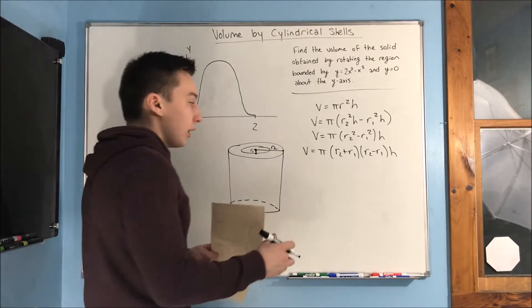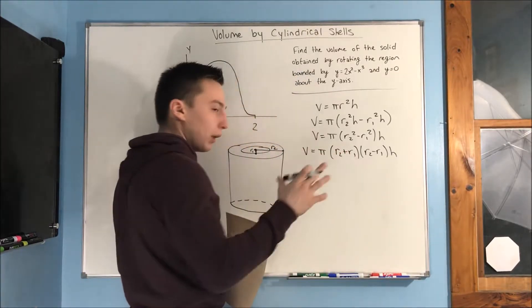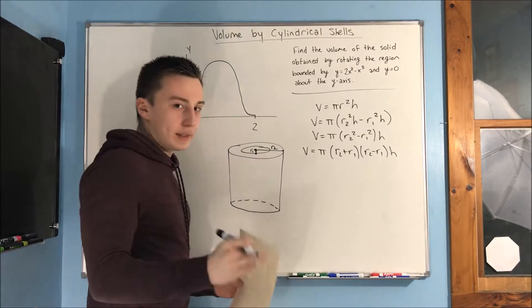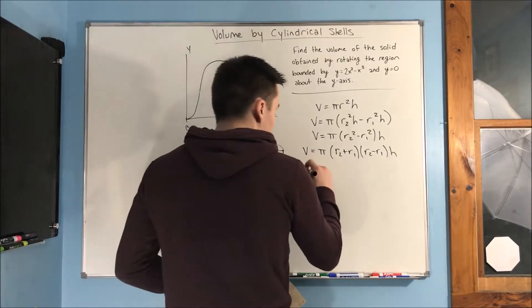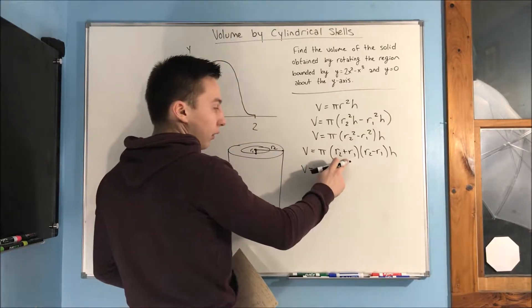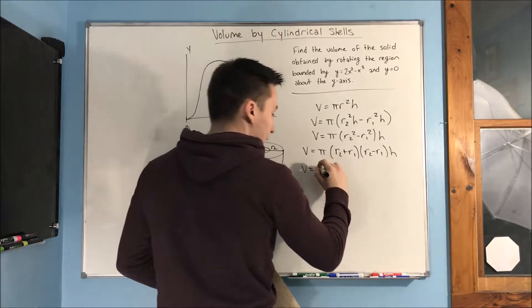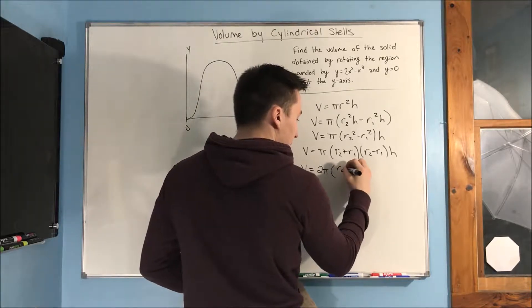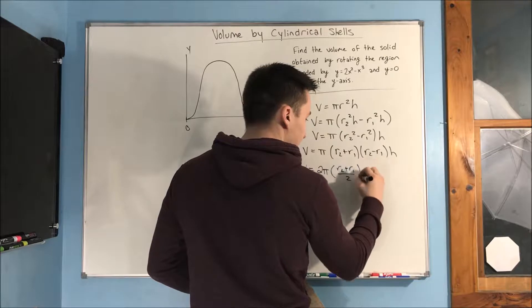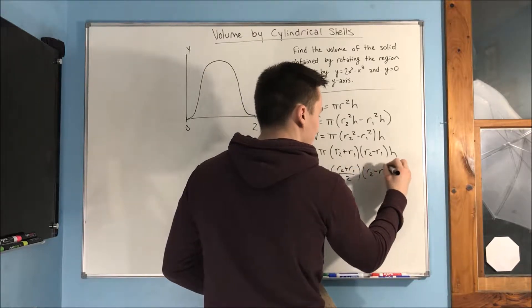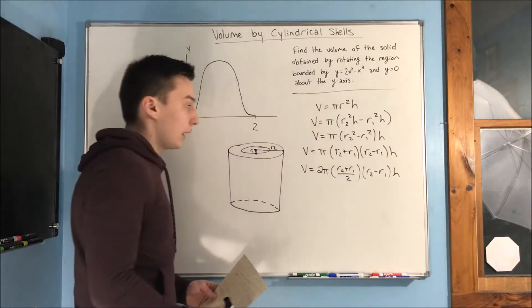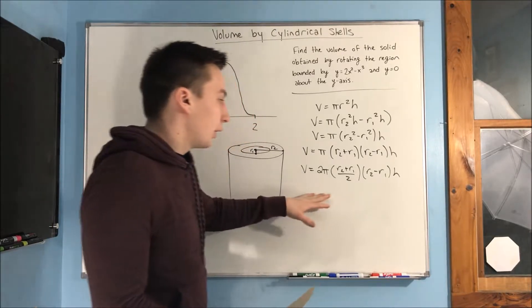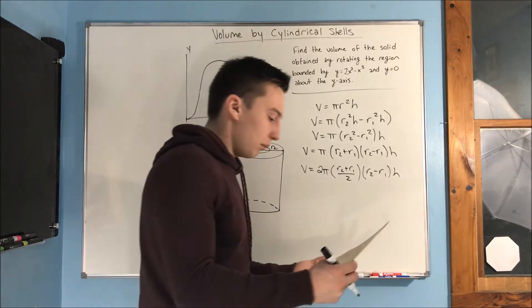So, we also can, look, what we're going to do, we're going to take out a 2 from this r2 plus r1, and I'll tell you why we do that in a little bit. But, if we take out a 2 here, then what we're going to get is 2 pi, and we're going to get a r2 plus r1 over 2. And then, of course, we have our r2 minus r1 times height. So, now we have, at this volume equation, what does this actually mean?